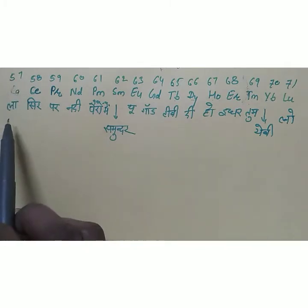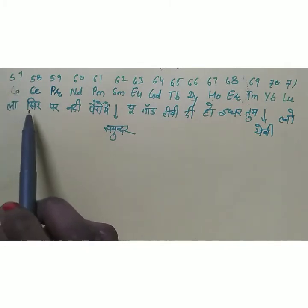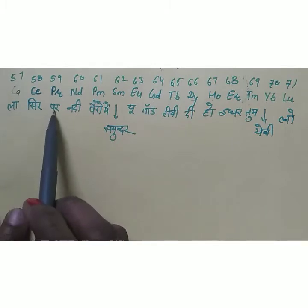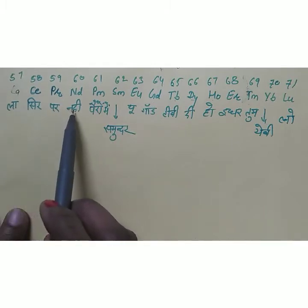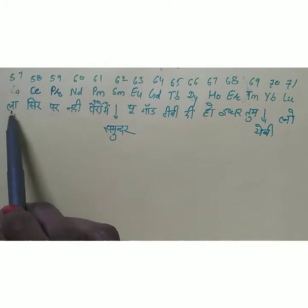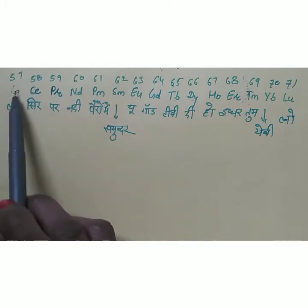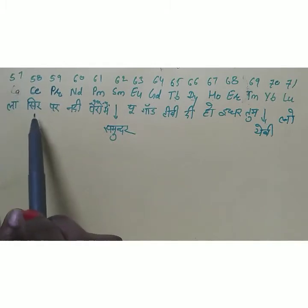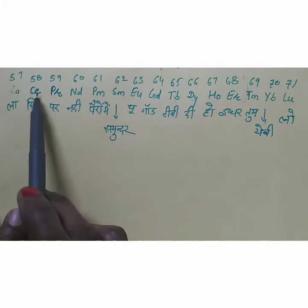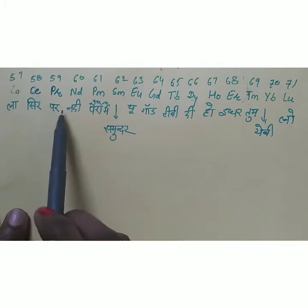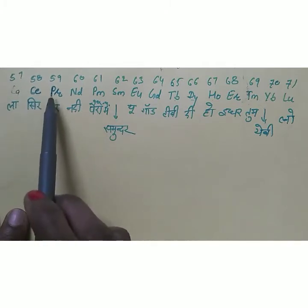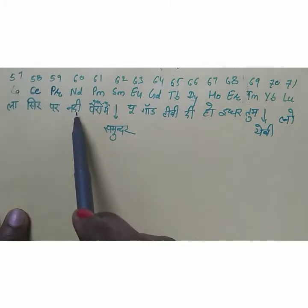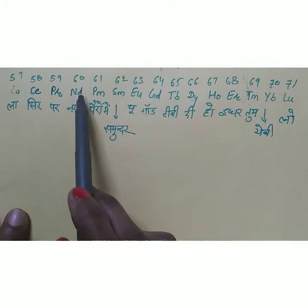What is the trick to learn them? It is a very easy and interesting mnemonic. 'La' means lanthanum, 'ce' means cerium, 'par' means praseodymium, 'nadi' means neodymium. So the phrase begins: La, ce, par, nadi — meaning lanthanum, cerium, praseodymium, neodymium.